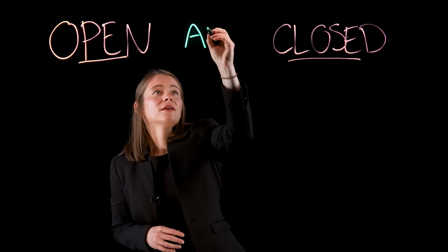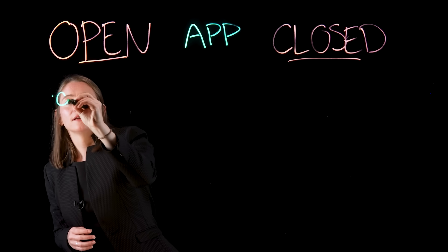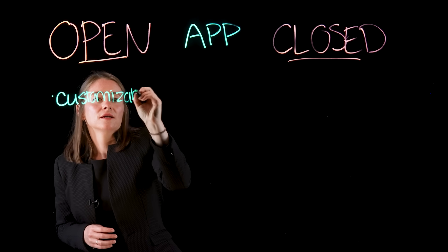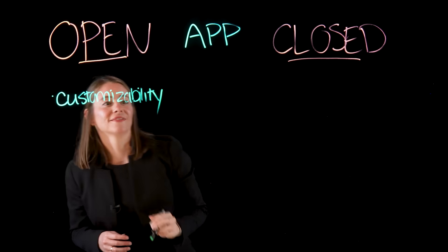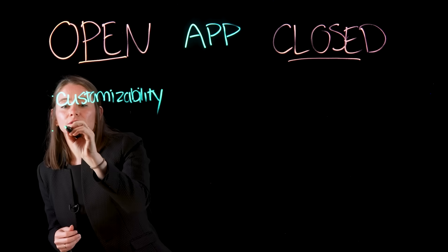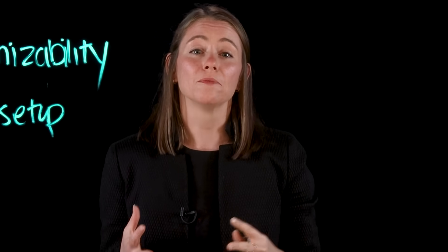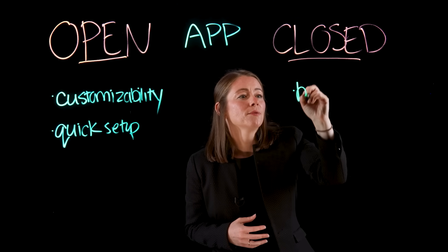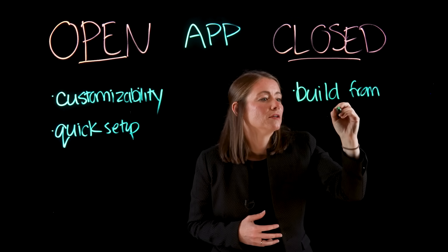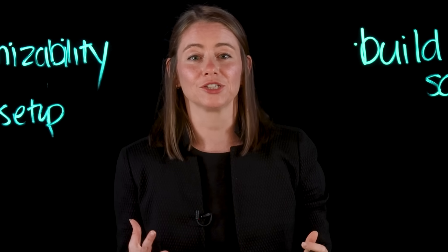Finally is the application layer, which defines the interface your user will use to interact with your AI solution. On the open side, solutions emphasize customizability — you could use things like Open Web UI or AnythingLLM to give you full control over the user experience. There are also options to optimize for quick setup, like Gradio or Streamlit, which let you quickly create web-based interfaces with minimal setup. On the closed side, the primary route would be to build from scratch, embedding your AI solution directly in the web or mobile application.